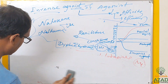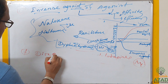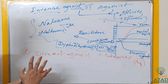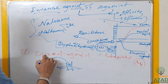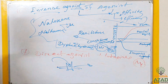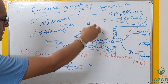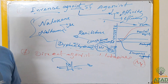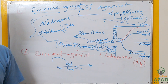The seventh type is direct agonist. Direct agonist means when the ligand or drug works directly on the receptor and gives its function as an agonist. Examples include dopamine, morphine, epinephrine, and acetylcholine — all direct acting agonists.